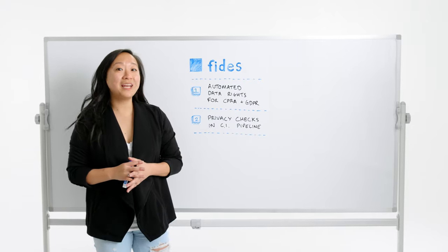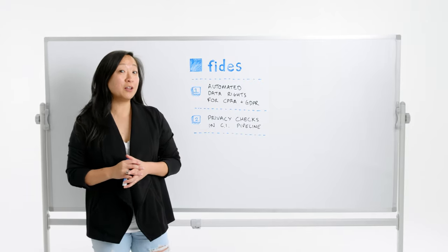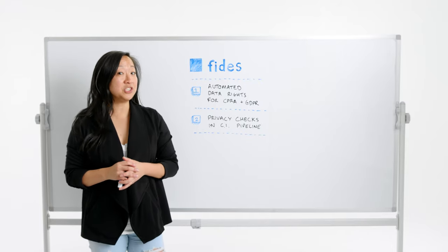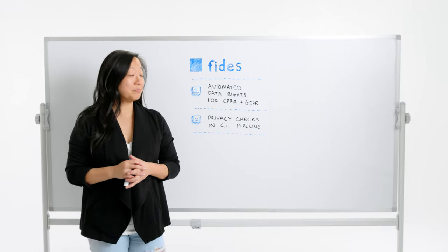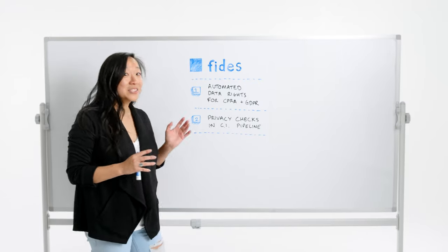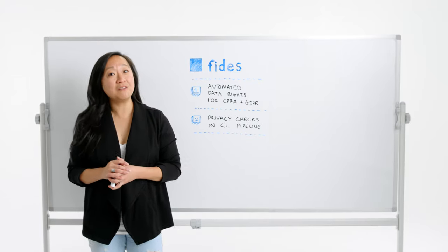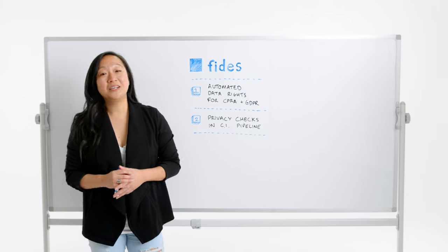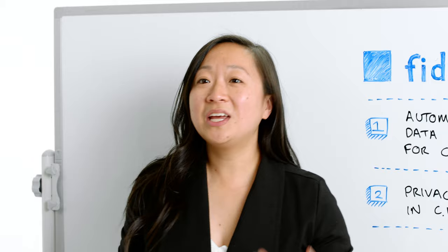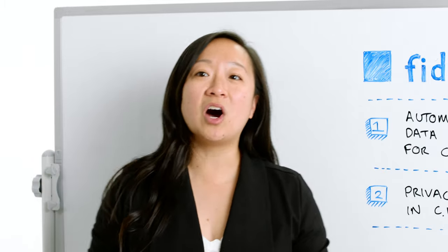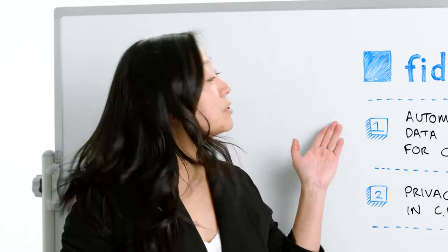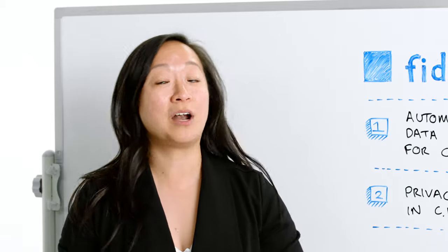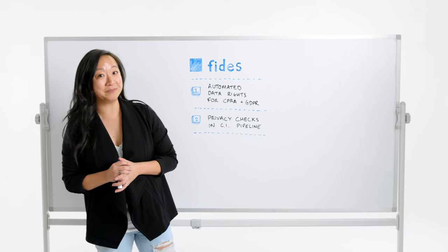First, automating data rights for California's CPRA and the EU's GDPR. Next, we'll talk about privacy checks in CI. So to start, your team can automate data rights for the CPRA and GDPR privacy rights fulfillment.